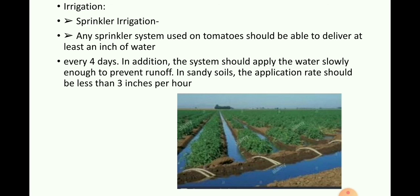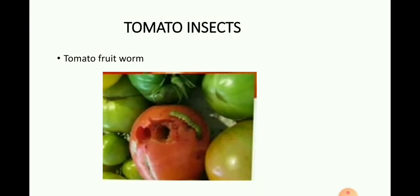Irrigation — Sprinkler irrigation: Any sprinkler system used on tomatoes should be able to deliver at least one inch of water every four days. The system should apply water slowly enough to prevent runoff. In sandy soils, the application rate should be less than three inches per hour.